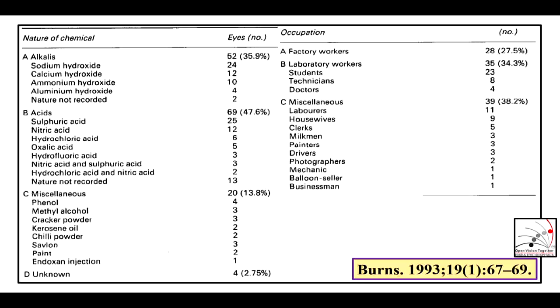From the UK we have very limited data. This is a very old study from 1993 in which alkalis contributed to 36% of injuries, acids were 48%, followed by other miscellaneous chemicals.